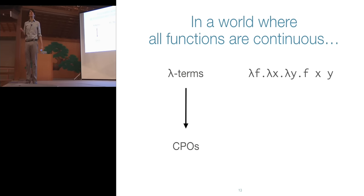Figuring out a nice way to formulate these operations is important for pushing this computational interpretation through to higher dimensions. That's the final research direction I want to mention before talking about what else you can do with homotopy type theory besides univalence.